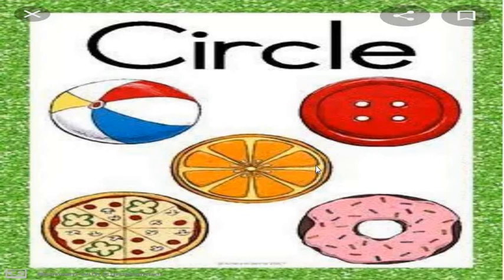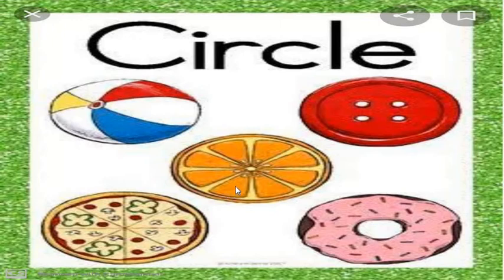What is this? Can you say that? Look — this is a ball, this is your favorite pizza, this is a slice of orange, this is a button, this is a sweet ring. So what is common about all these objects? What's common in them? They all are in circle shape. Which shape is this? Circle.